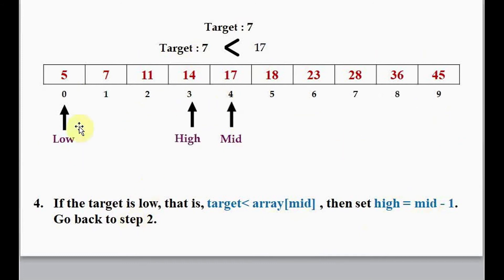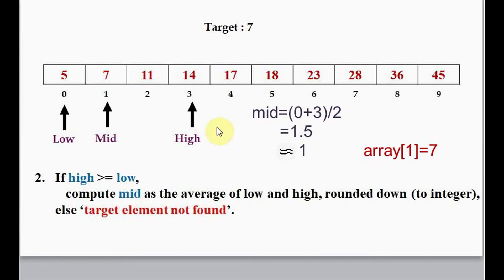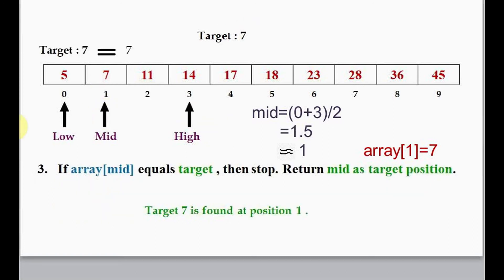We go back to step 2 with high now changed to 3. We compute mid again: 0 plus 3 divided by 2 gives 1.5, rounded to integer gives 1. Again we compare array[mid] to target — yes, both are equal, so we return mid as the target position. Target 7 is found at position 1. That's it for case 2.